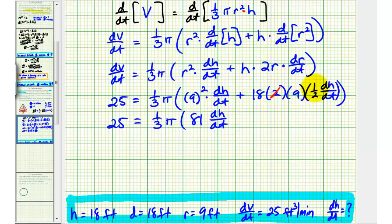Notice here the two and the one-half simplifies to one. Eighteen times nine is equal to 162. So we have plus 162 dh/dt.